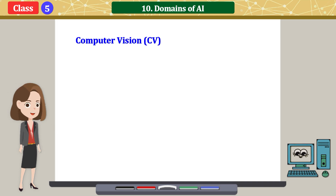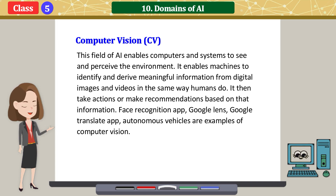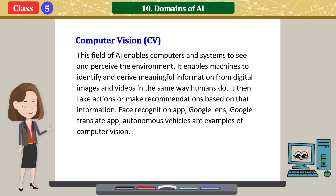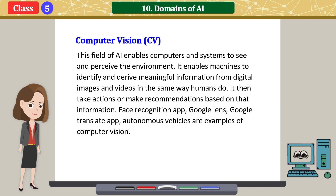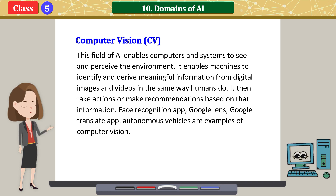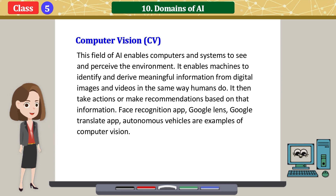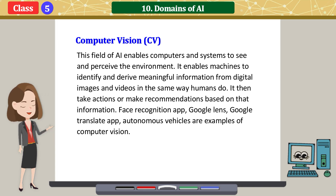Computer Vision is a field of AI that enables computers and systems to see and perceive the environment. It enables machines to identify and derive meaningful information from digital images and videos in the same way humans do, and then take actions or make recommendations based on that information. Face recognition apps, Google Lens, Google Translate app, and autonomous vehicles are examples of Computer Vision.